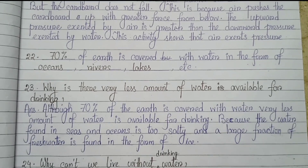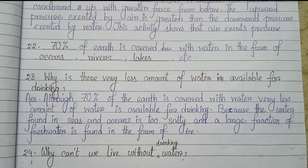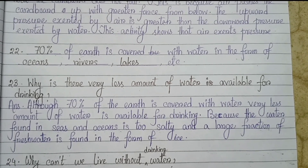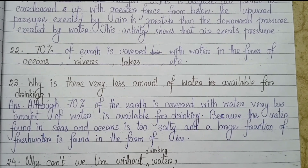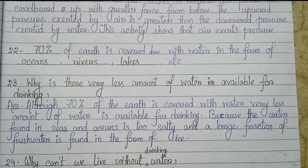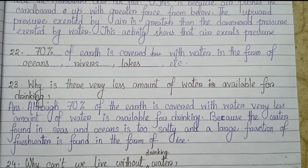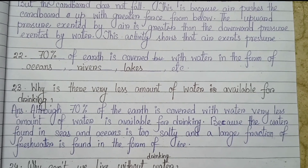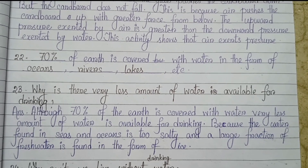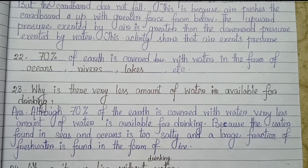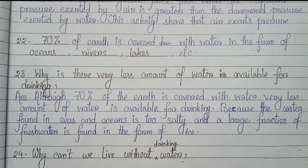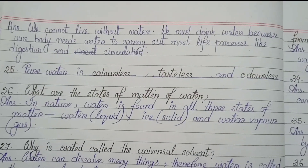Number 22: 70% of earth is covered with water in the form of oceans, rivers, lakes etc. Number 23: Why is there very less amount of water available for drinking? Although 70% of the earth is covered with water, very less amount of water is available for drinking because the water found in seas and oceans is too salty and a large fraction of fresh water is found in the form of ice.